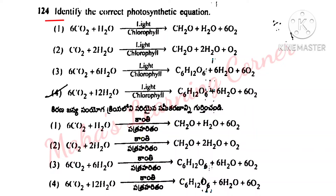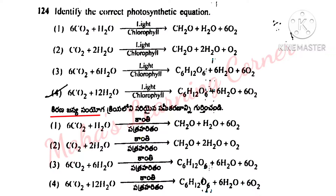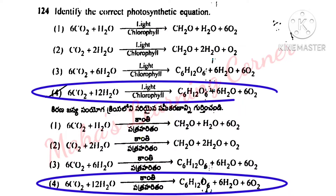Identify the correct photosynthetic equation. Correct option is option 4: 6CO2 + 12H2O in the presence of light and chlorophyll gives rise to C6H12O6 + 6H2O + 6O2.